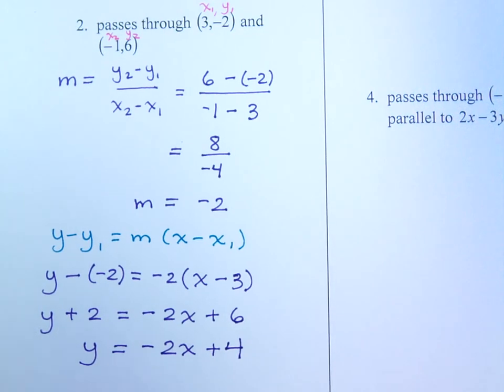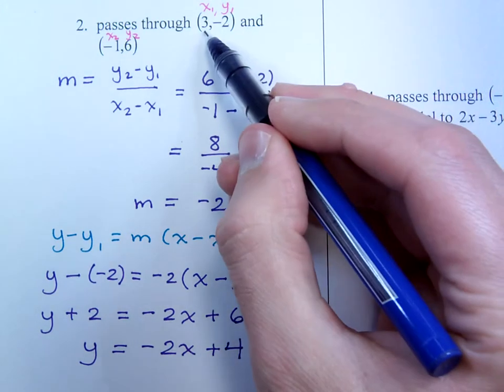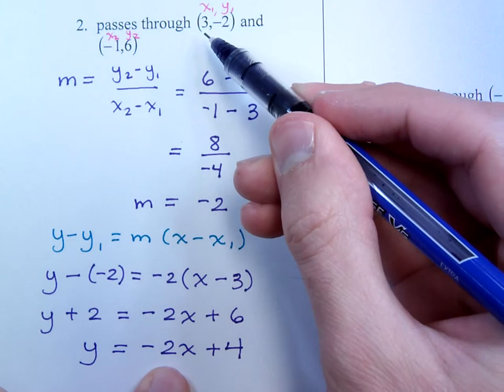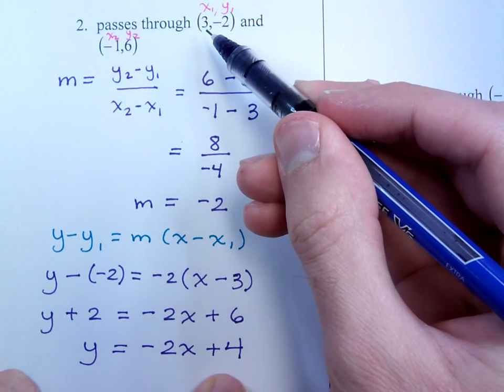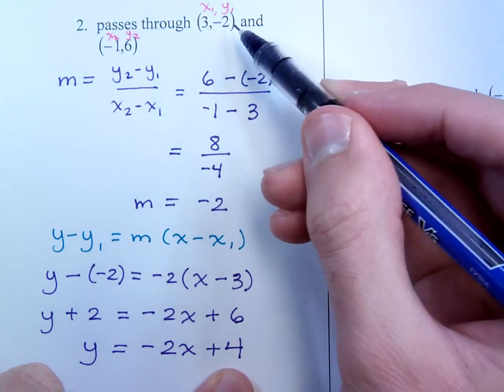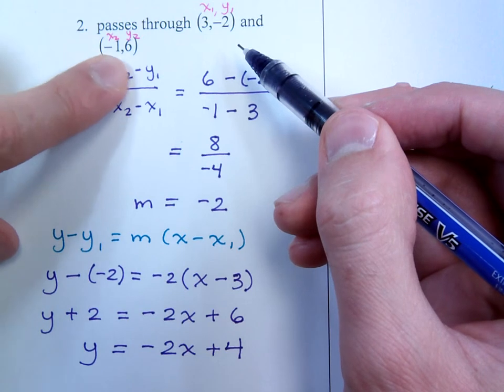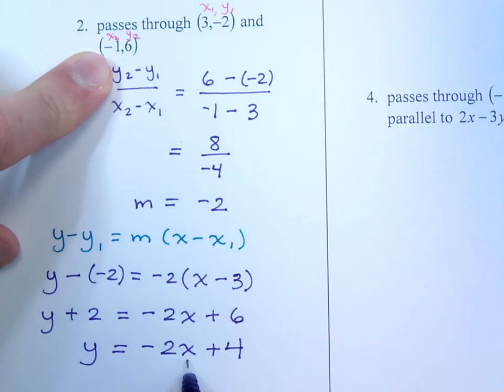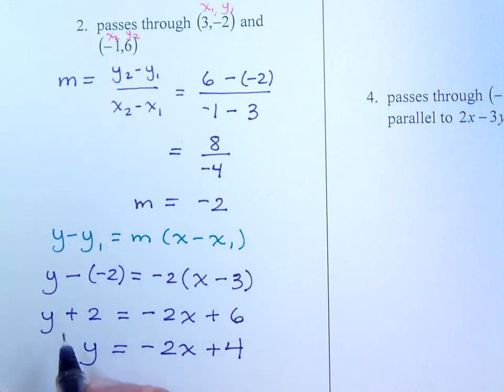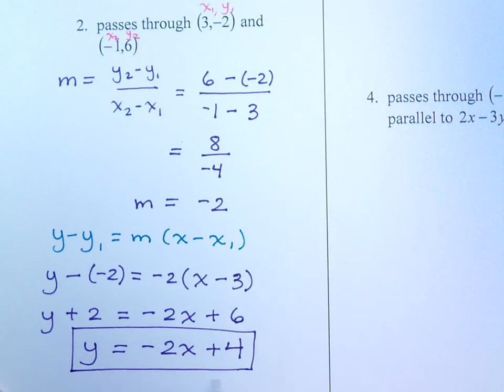Now, check to make sure this is right. If I plug in 3, so negative 2 times 3 is negative 6. Negative 6 plus 4 is negative 2. That checks out. Plug in negative 1, 6. We'll plug in negative 1. Negative 2 times negative 1 is positive 2 plus 4 equals 6. So, both of those points end up being solutions to that equation, so we know we have it right.